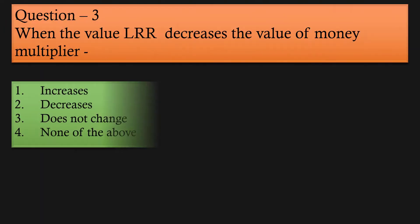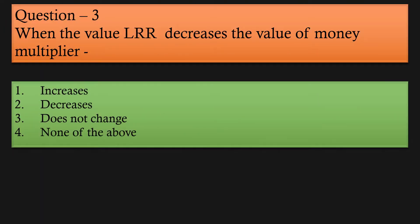Question 3: When the value of legal reserve ratio decreases, the value of money multiplier — (a) increases, (b) decreases, (c) does not change, (d) none of the above. Option 1 is correct. With this, our lesson ends. We shall meet in the next lesson.